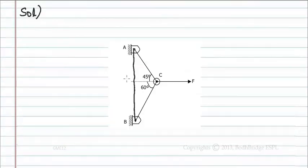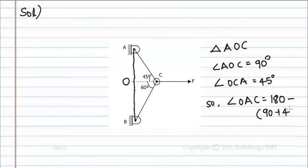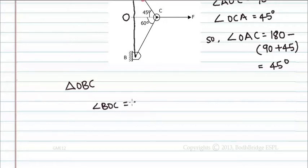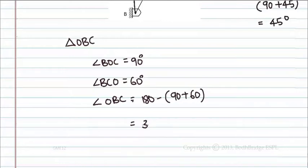Let us call this point O. In triangle AOC, angle AOC is equal to 90 degrees and angle OCA is equal to 45 degrees. So angle OAC is equal to 180 minus (90 + 45), which is equal to 45 degrees. In triangle OBC, angle BOC is equal to 60 degrees, so angle OBC is equal to 180 minus (90 + 60), which equals 30 degrees.